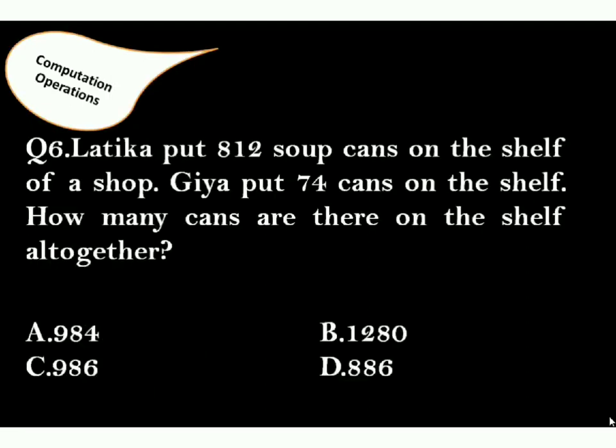Question 6: Latika put 812 soup cans on the shelf of a shop. Gia put 74 cans on the shelf. How many cans are there on the shelf altogether? The correct answer is option D. Simply, you have to add these numbers.